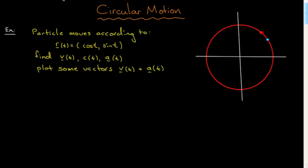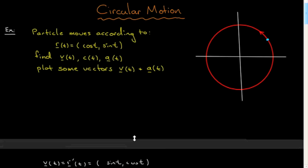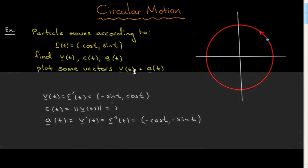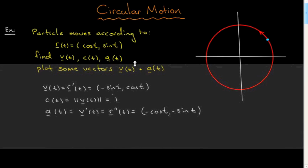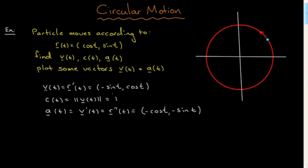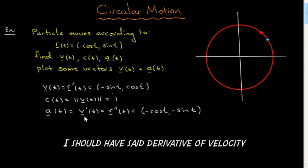I want to spend time on the algebraic manipulation, so I've done the calculations, which you can easily verify. This is the velocity vector — the derivative of position. The speed, which is the magnitude of velocity, is one here. And the acceleration, which is the derivative of velocity, is shown here.